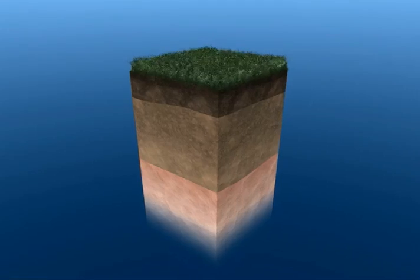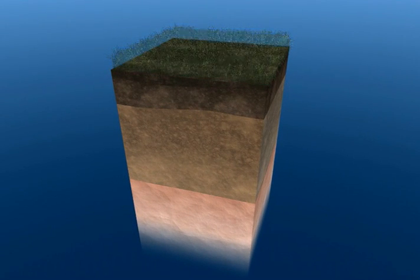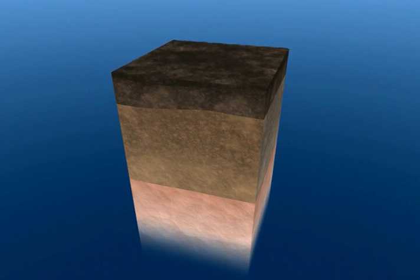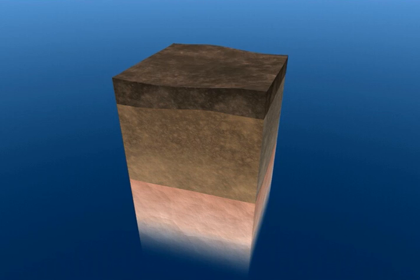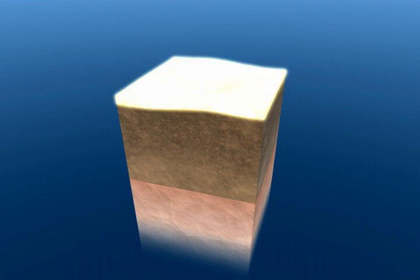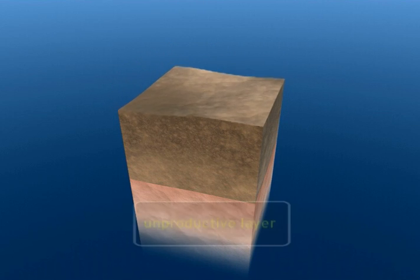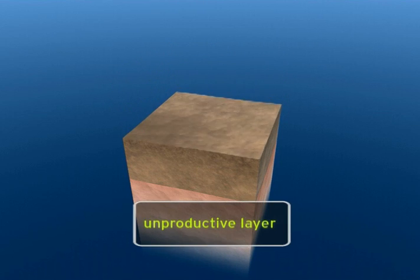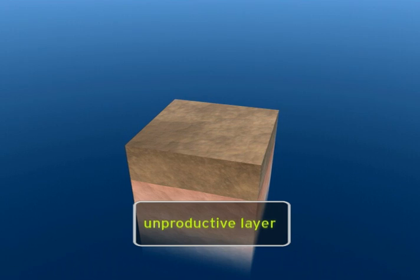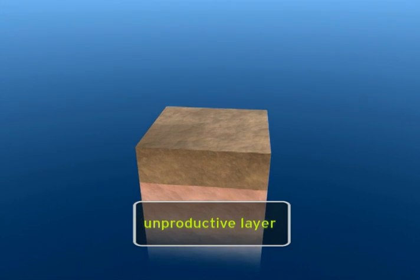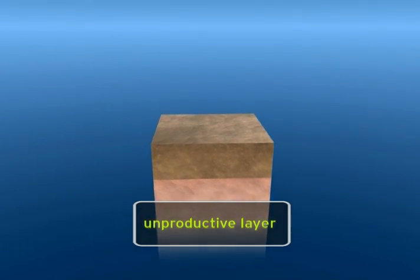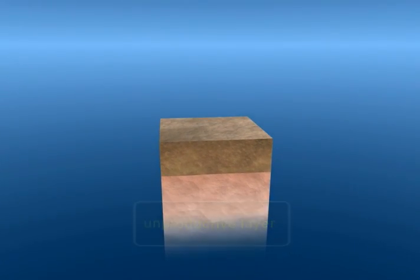Erosion removes the topsoil first, eventually exposing the less productive subsoil beneath. In the most severe cases, eroded land may no longer be productive and must be abandoned.